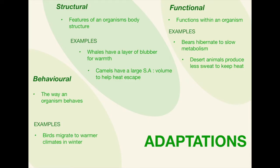Next, we have adaptations. There are three different types of adaptations: behavioural, structural, and functional. Starting with behavioural — it is just the way an organism behaves. An example of this would be the way birds migrate to warmer climates in winter. If you can think of any more examples, please let me know down below in the comments as it will help a lot of other people as well.